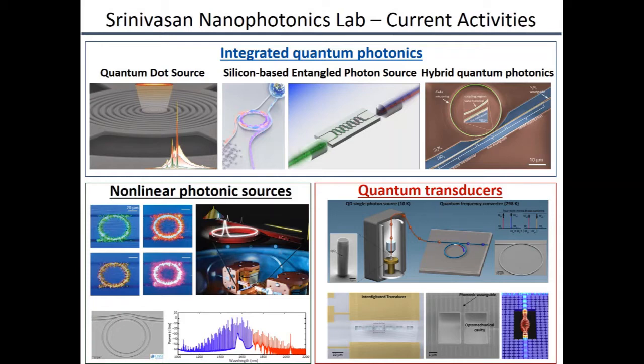We're also working on nonlinear optical light sources that can coherently control and interrogate quantum systems for applications in quantum networks and the creation of portable optical atomic clocks. Finally, we're developing transducers that can connect quantum systems operating in different parts of the electromagnetic spectrum by harnessing physical processes like four-wave mixing, piezoelectricity, and photoelasticity.